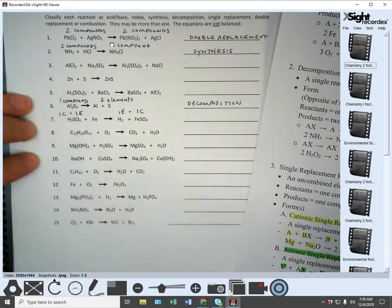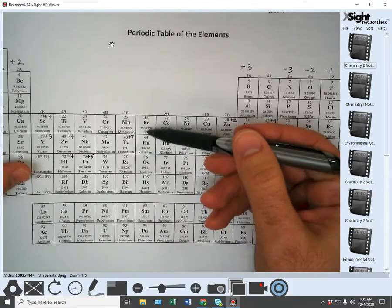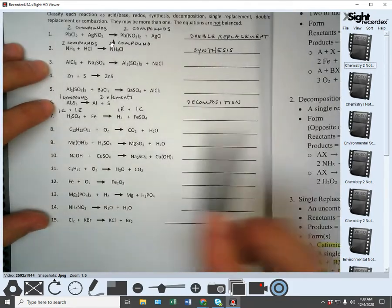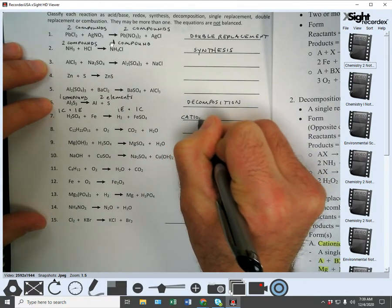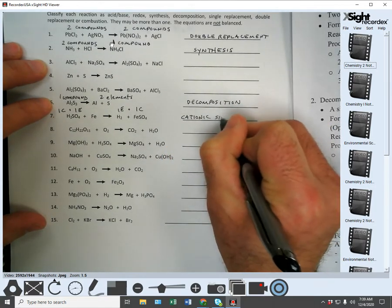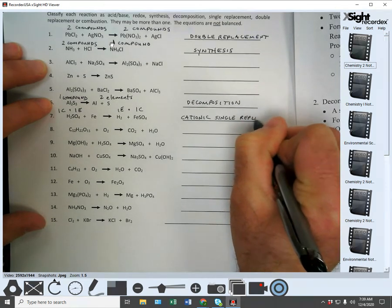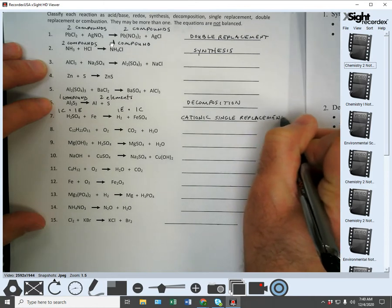So that means the Fe, Fe is a positive ion. Like if we look on our periodic table, we don't know what the charge is, but we know it's a cation because it's a metal. So this has to be cationic single replacement.